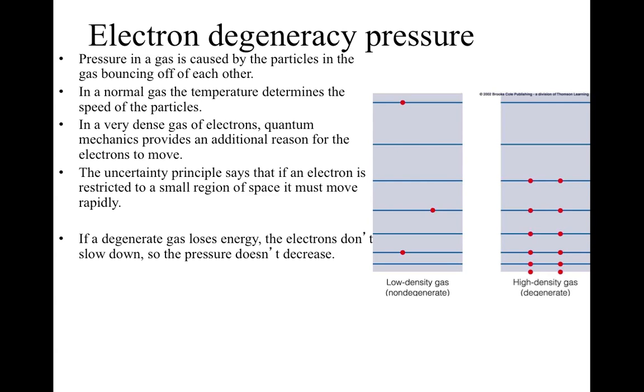Now, why does the helium burn so quickly? The reason is this. In a normal star, pressure in the gas is caused by the particles bouncing off of each other, and in the normal gas, the temperature determines the speed of the particle, so the higher the temperature, the higher the pressure. When you heat the gas up, the pressure goes up, and that pushes things apart.